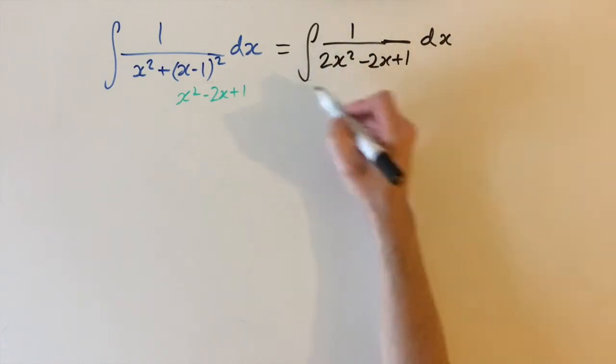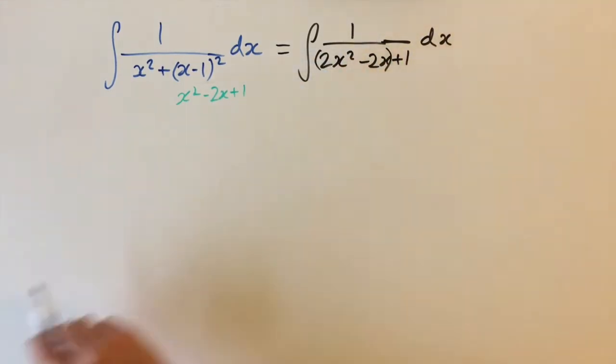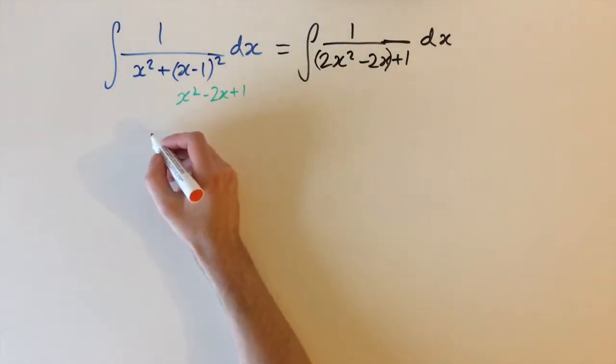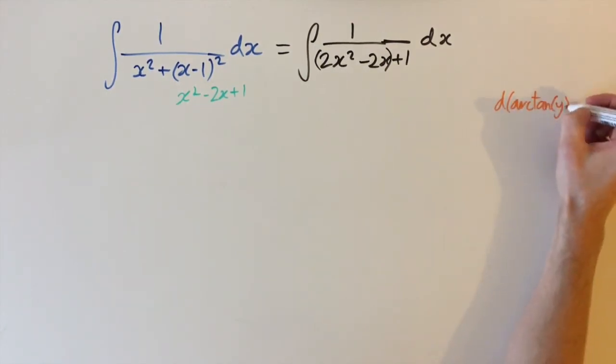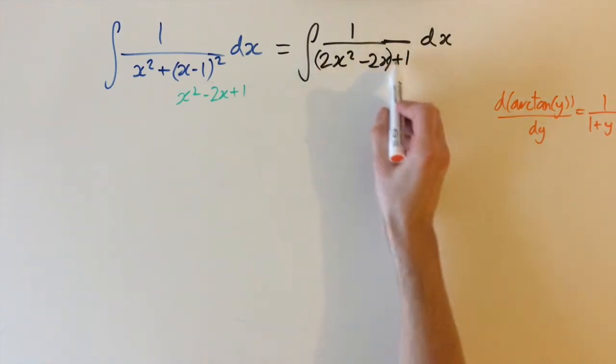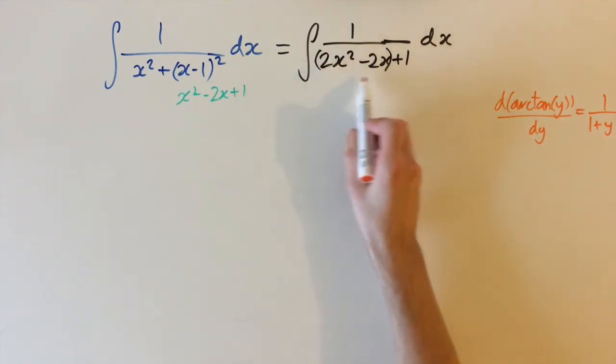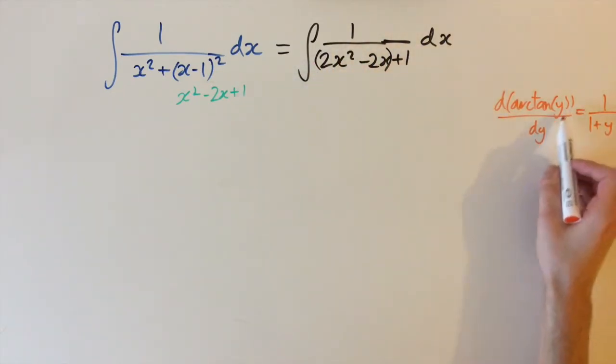Now the key insight to solving this integral is to group these two terms together and remember that the derivative of arctan, which is the same as inverse tan of y, dy is equal to 1 over 1 plus y squared. So if we can factorize this into a complete square form, like a squared function in terms of x, then we could straight away integrate this to get arctan of that function.